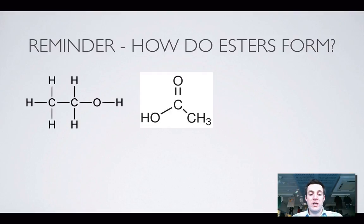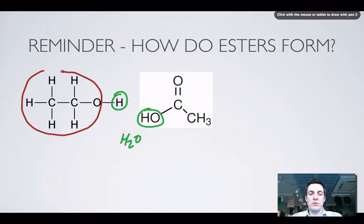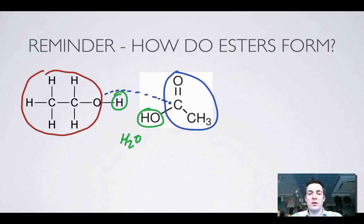Just to remind you how esters form. Well the hydrogen of an alcohol is lost together with the OH of a carboxylic acid. They make the water. And in the process we form this new bond between the alcohol part of the molecule and the carboxylic acid. So we've got a new bond between those two atoms.